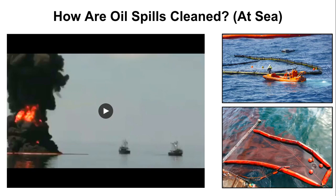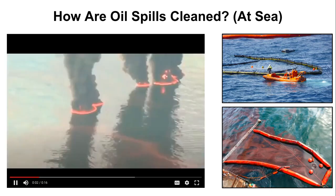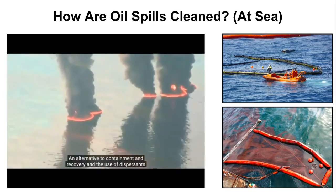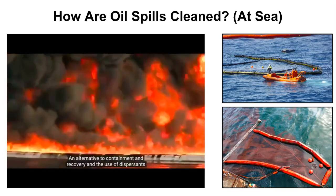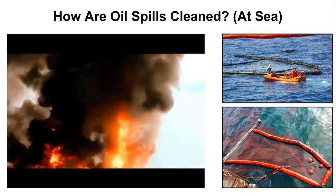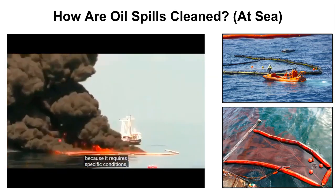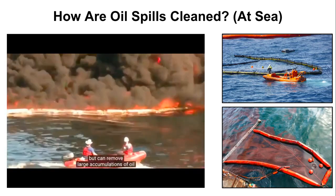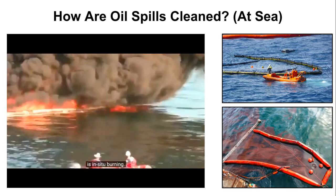Boats with floating skimmers remove thin layers of oil from the surface with the help of booms. Another at-sea response is burning the oil. Freshly spilled oil can be set on fire, usually when it's floating on the water, to effectively remove it. There is an alternative to containment and recovery and the use of dispersants, which has not been used in many spill incidents because it requires quite specific conditions, but it can remove large accumulations of oil — and that's in-situ burning.